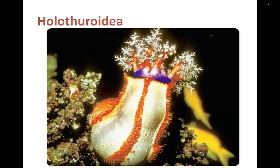Sea cucumbers have elongated bodies and move sluggishly by means of tube feet assisted by contractions of the muscular body wall. Their calcium carbonate plates do not connect, giving them a leathery appearance. Some tube feet have been modified into tentacles with sticky substances to capture free-floating prey. They are the only animals with respiratory organs in the form of respiratory trees — many-branched tubes that pump seawater through the anus for oxygen extraction. The respiratory tree also functions in excretion. Sea cucumbers can eject some of their internal organs through their anus, which they can later regenerate, to distract or confuse predators.